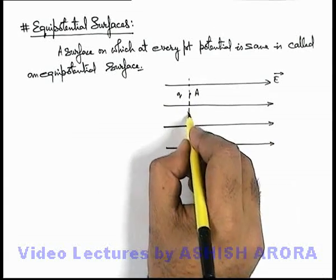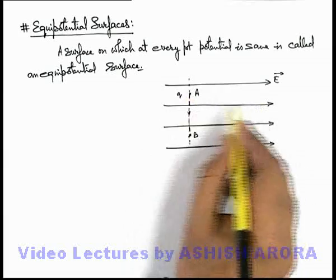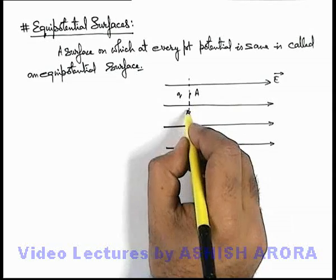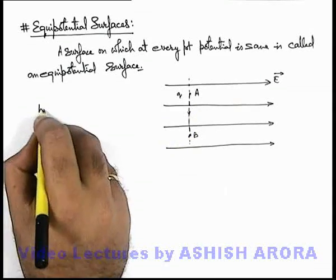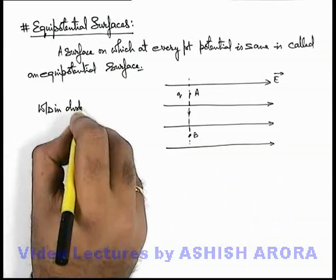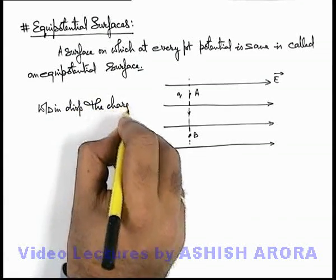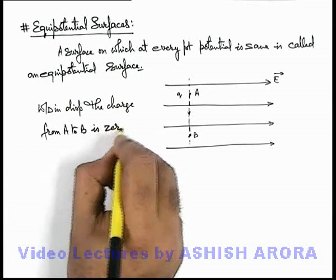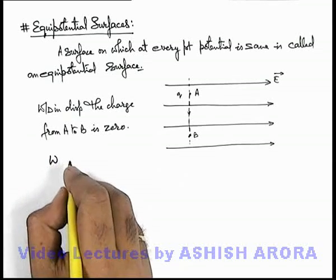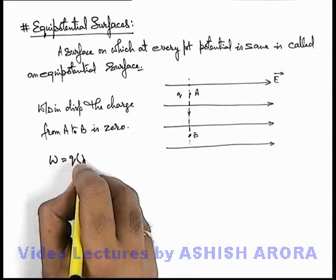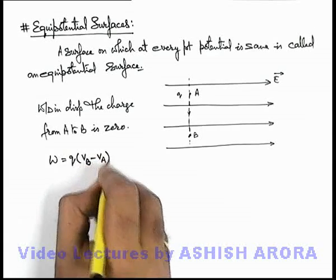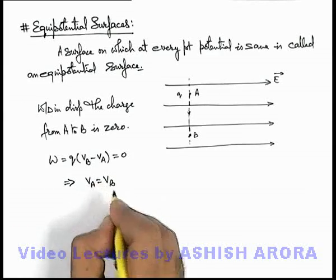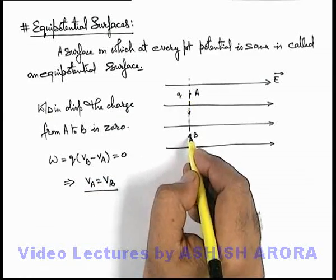If the charge q is displaced from point A to B in the direction perpendicular to the electric field, you can see the displacement and the force on the charge are perpendicular to each other. So in this situation we can say work done in displacing the charge from A to B is zero. We know that work done in displacing a charge is written as charge multiplied by potential difference V_B minus V_A. If this is equal to zero, this implies V_A is equal to V_B — that means point A and B are at the same potential.